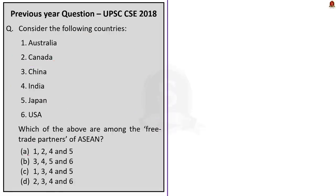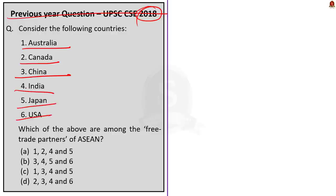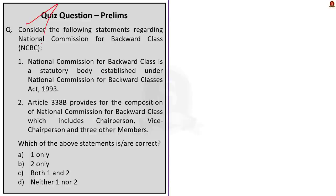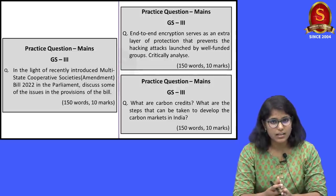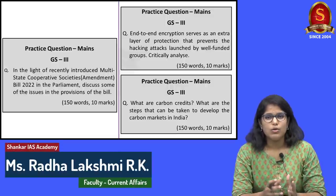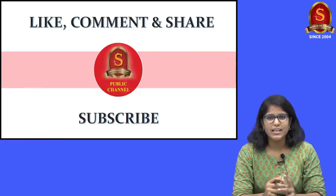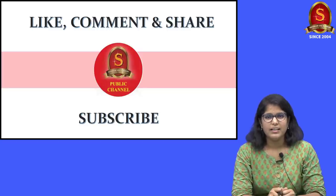A previous UPSC 2018 question asks which among Australia, Canada, China, India, Japan and USA are free trade partners of ASEAN. The correct answer is Option C (Australia, China, India and Japan). ASEAN's free trade agreement partners are Australia, China, India, Japan, South Korea and New Zealand — Canada is not among them. The session concludes with main practice questions displayed on screen for viewers to attempt and post in the comment section. If you liked the video, hit like, comment and subscribe to Shankar IAS Academy's YouTube channel.